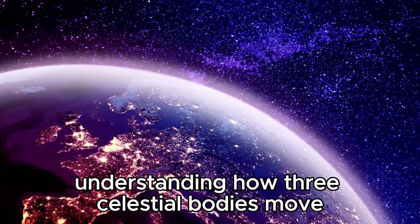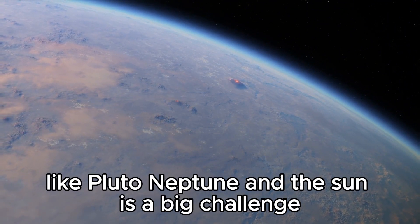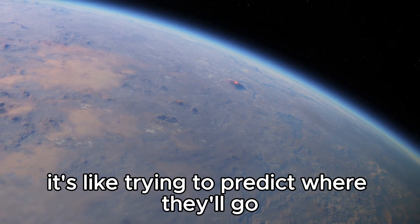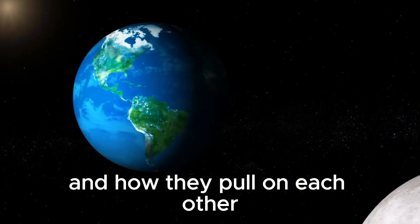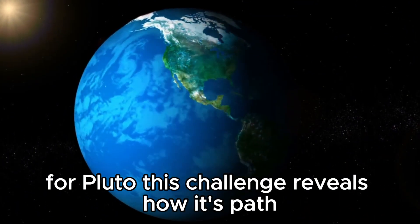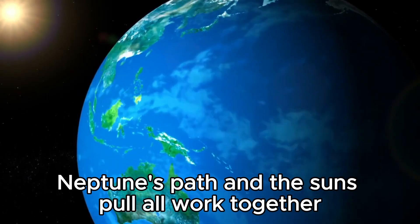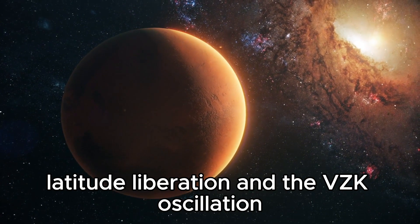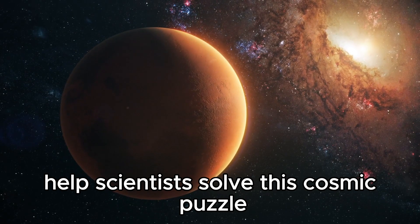Understanding how three celestial bodies move and interact gravitationally, like Pluto, Neptune, and the Sun, is a big challenge. It's like trying to predict where they'll go based on where they start and how they pull on each other. For Pluto, this challenge reveals how its path, Neptune's path, and the Sun's pull all work together. Terms like azimuthal libration, latitude libration, and the VZK oscillation help scientists solve this cosmic puzzle.